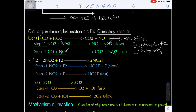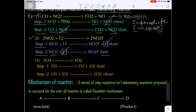Example 2: 2NO2 + F2 gives 2NO2F. This also has a two-step process. In step 1, NO2 + F2 gives NO2F + F (nascent fluorine) — this is a slow process. In step 2, NO2 + nascent fluorine combine to give NO2F — this is a fast step. Adding these two reactions gives the overall reaction: 2NO2 + F2 → 2NO2F.